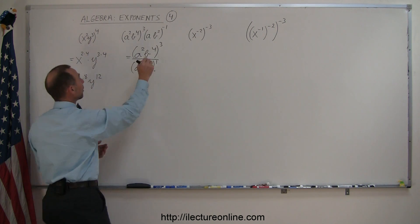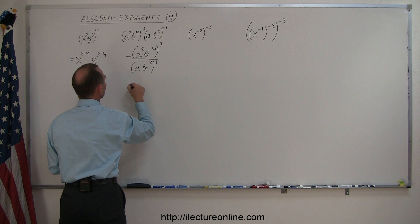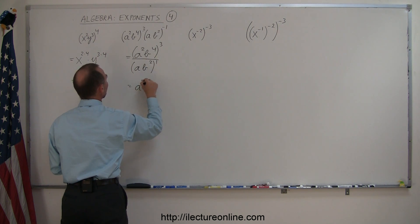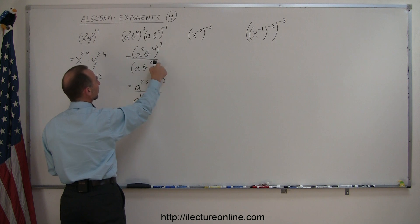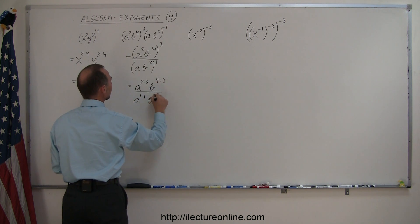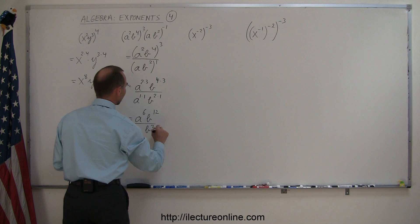Next, we then multiply this exponent with these exponents with this number right there. So this is equal to a to the 2 times 3, b to the 4 times 3, divided by a to the 1 times 1 because it's like a to the 1st power multiplied by 1, times b to the 2 times 1. And so this becomes a to the 6th, b to the 12th, divided by a, b to the 2nd power.